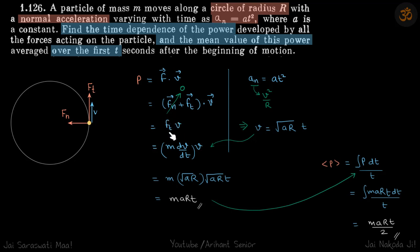Now F_t we can write as m into a_t, and here is given a_n not a_t, so we will write a_t as dv/dt into v. So now we need the value of v as a function of time. For that we are going to use this formula.